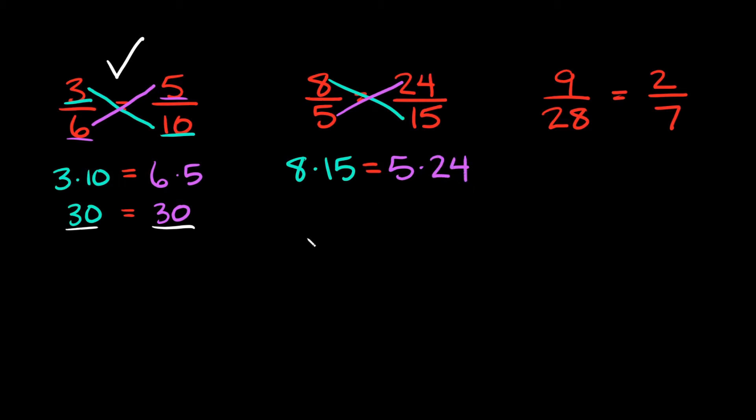Now 8 times 15 is equal to 120, and I'm going to set that equal to 5 times 24, which is also equal to 120. So again since these are equal to each other, that means these two fractions up here, 8 over 5 and 24 over 15, are proportional.